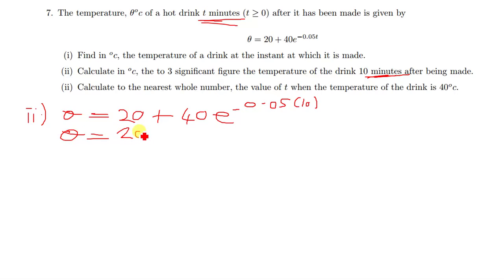When the value of t is 10, you put 10 there. So you're going to have θ equal to 20 plus 40e^(-0.5×10). We'll get negative 0.5. Negative 0.5 is the same as negative half.